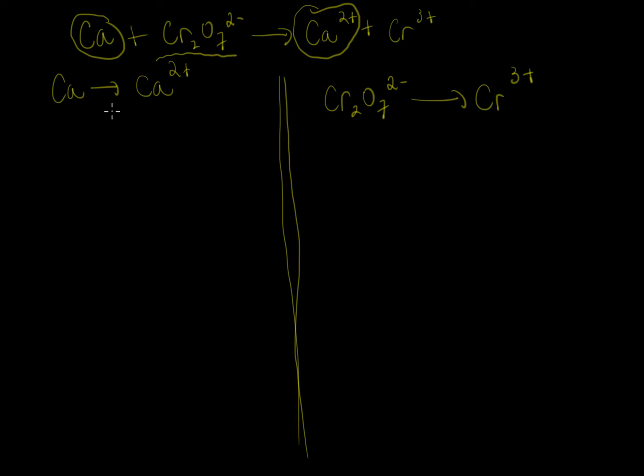Step 2 is to balance the elements. Calcium is balanced. Chromium here is not balanced. To balance this chemical reaction we need to put a 2 in front of the chromium. There's a 2 here so it means we need a 2 here. Now chromium is balanced.